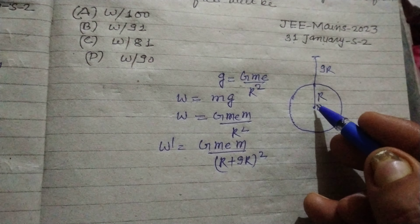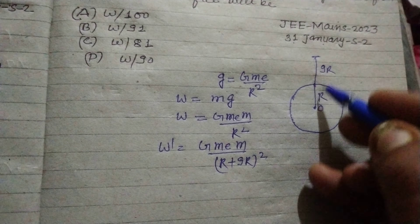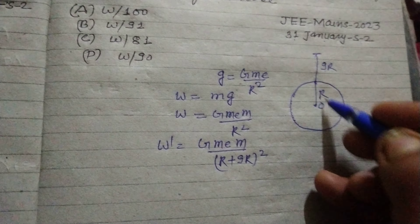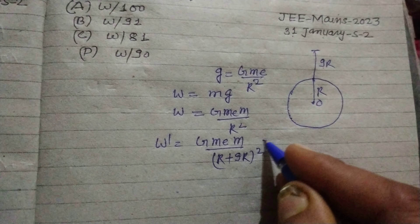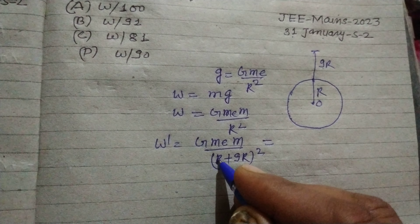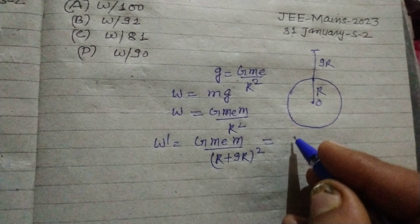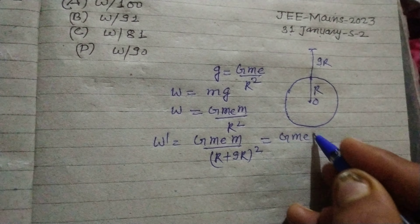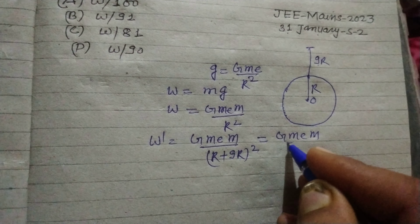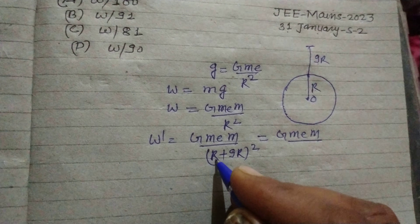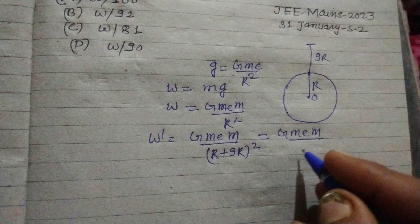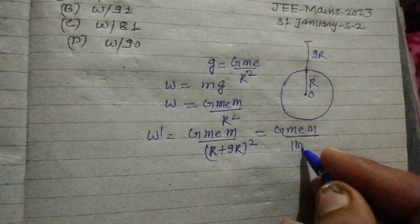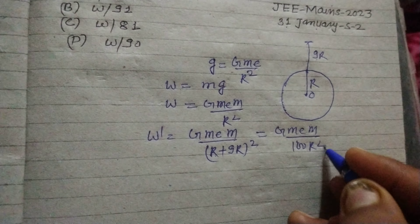The total distance of the man from the earth's center is 9R + R = 10R. So W' = GmE / (10R)², and since (10R)² = 100R², this gives GmE / 100R².